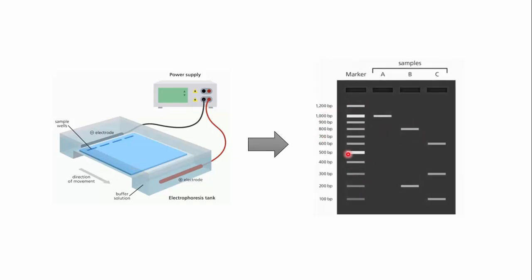A DNA marker with fragments of known length is usually run through the gel at the same time as other samples. After gel electrophoresis, by comparing bands of DNA samples with this DNA marker, we can easily work out the approximate length of the DNA fragments in the sample.